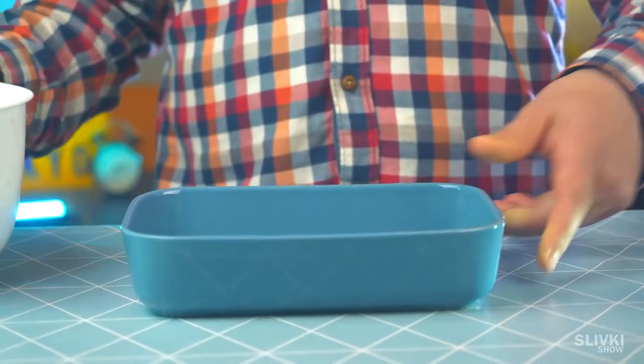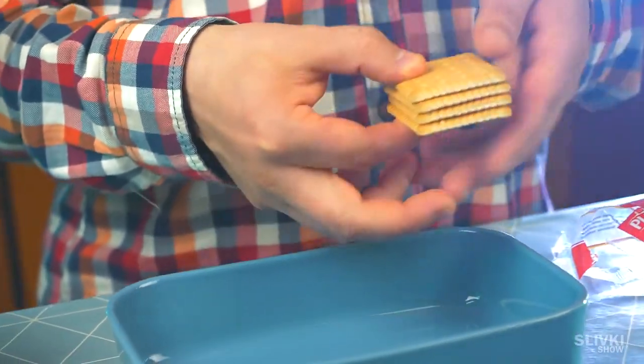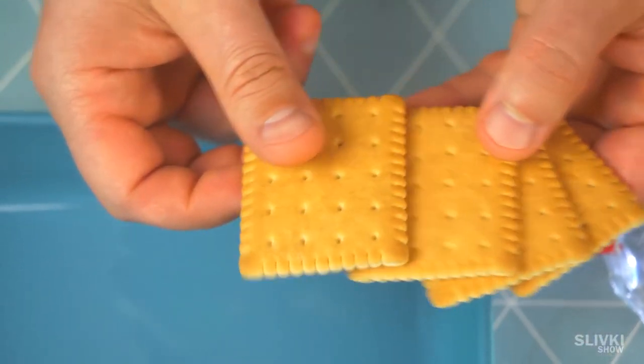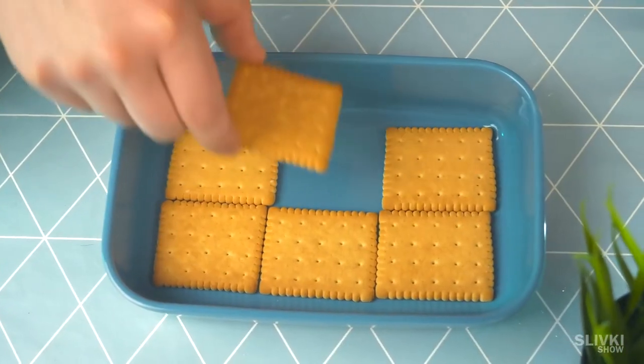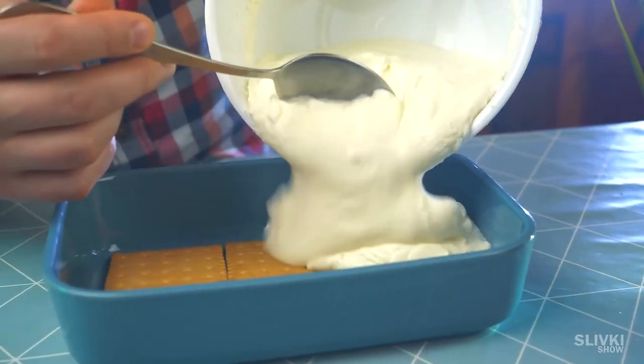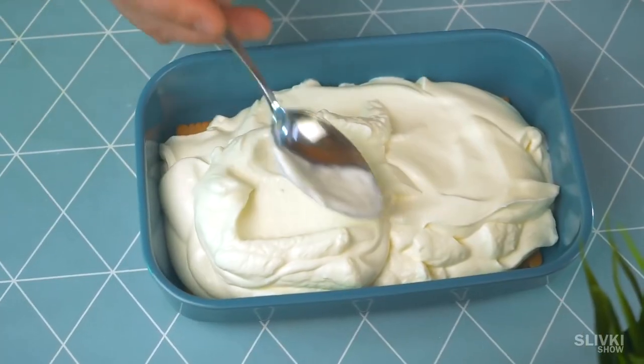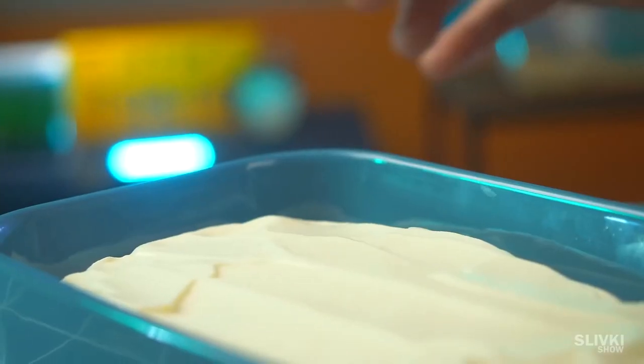Now put it off and take cookies that should be placed there. Better if cookies fill the whole bottom of the form, like we have. Then transfer our substance to the cookies, distribute a smooth layer on the surface, and place cookies on top.